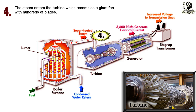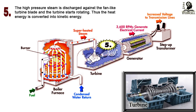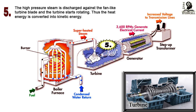As the turbine absorbs energy from the high-energy fluid, its pressure and temperature drop toward the outlet. The high-pressure steam is discharged against the fan-like turbine blades and the turbine starts rotating.